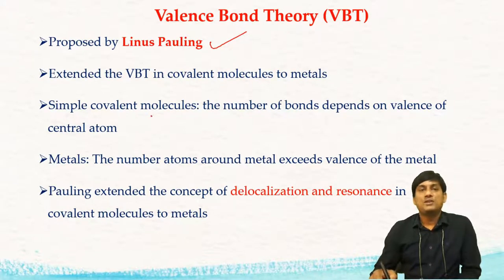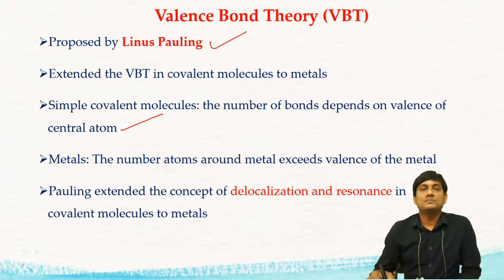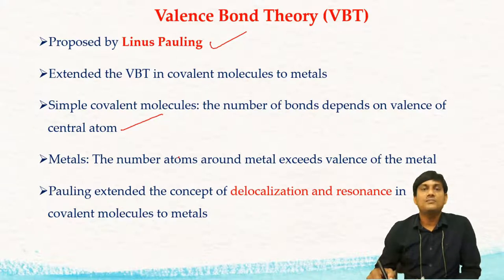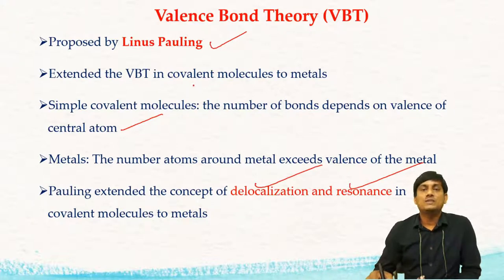In simple covalent molecules, the number of bonds on the central atom are equal to the valency of the central atom. But in the case of metals, the number of bonds on the central metal atom exceeds the valency of the central atom. This excess number of bonds on the central metal atom was explained by Linus Pauling by extending the concept of delocalization and resonance in covalent molecules to the metals.